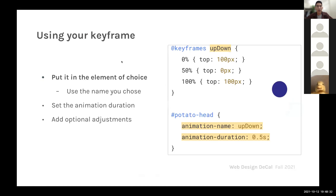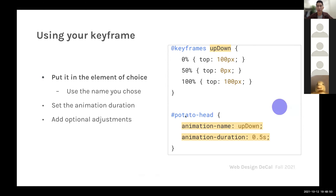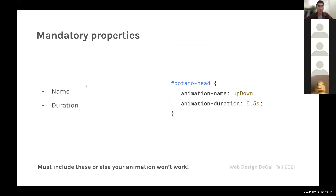Now that we have this keyframe — this set of rules — how do we apply it to a specific element? We simply put it in the element of our choice using this syntax: animation-name: up-down. This tells the potato-head element to apply this animation and go from top to bottom and back to top. We also need to specify an animation-duration, which is 0.5 seconds — that's how long the entire 0% to 100% process takes. These two properties, name and duration, are the mandatory properties for any CSS animation. If we don't have a duration, nothing is going to happen on our page — CSS will just completely ignore whatever animation you have.